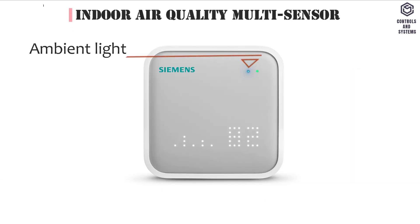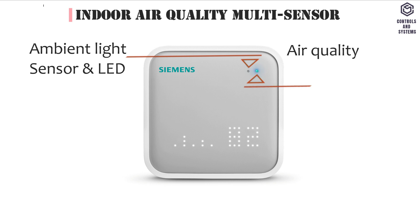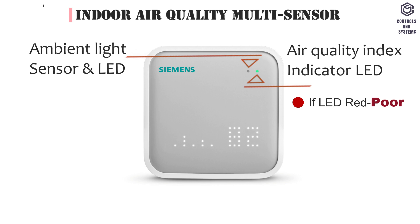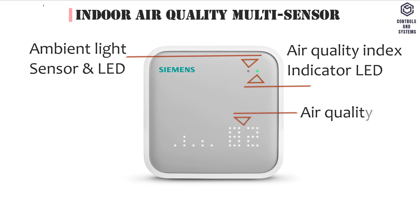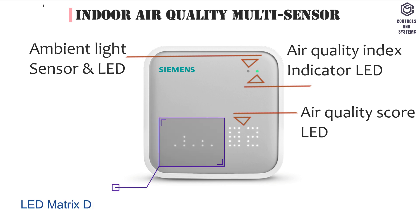This is the Ambient Light Sensor and LED. This is the Air Quality Index Indicator LED. If the LED is red, air quality is poor. If the LED is yellow, air quality is fair. If the LED is green, air quality is good. This is the Air Quality Score LED and Air LED Matrix Display for environmental sensors.